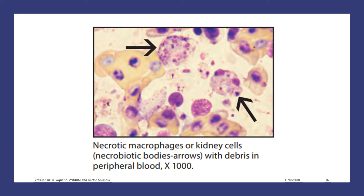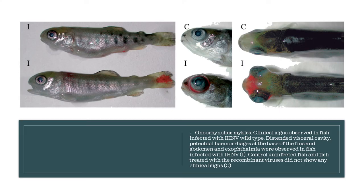For the histopathology, we have necrotic macrophages or kidney cells, and necrobiotic bodies with debris in the peripheral blood. We also have the clinical signs of IHN in rainbow trout infected with IHN virus. The fish infected with the wild-type IHN virus shows a distended visceral cavity, presence of petechial hemorrhages at the base of the fins and in the abdomen, and exophthalmia. The control uninfected fish did not show any clinical signs.